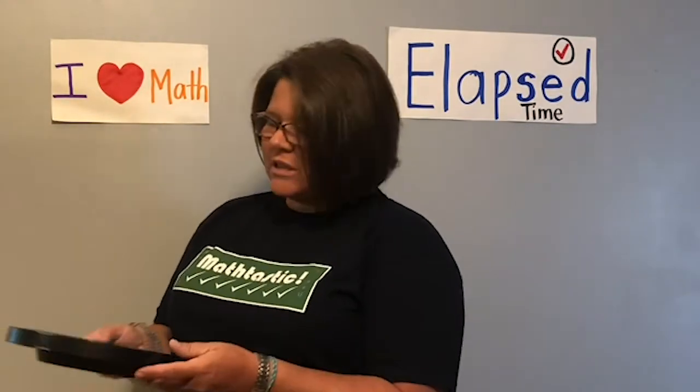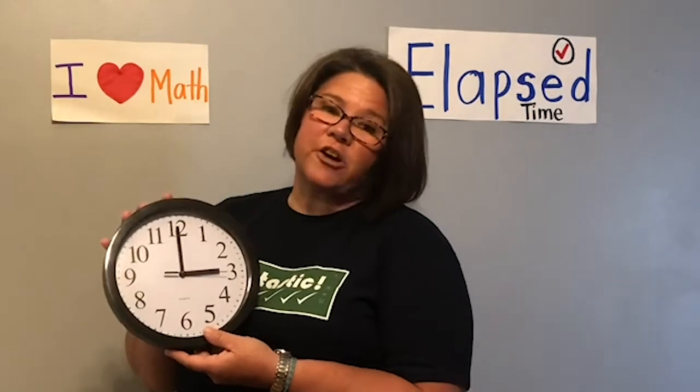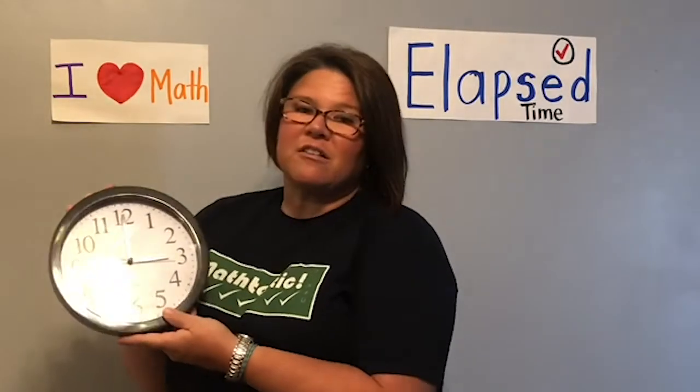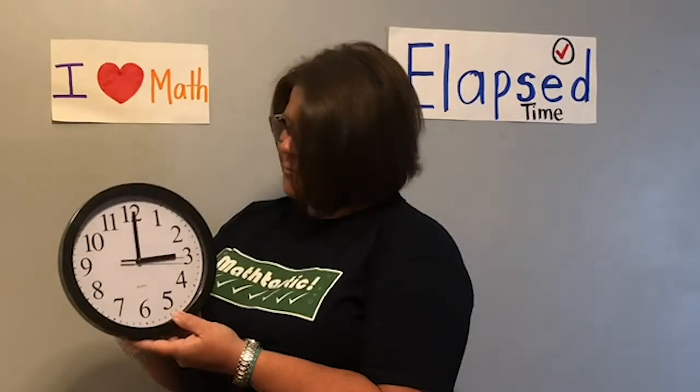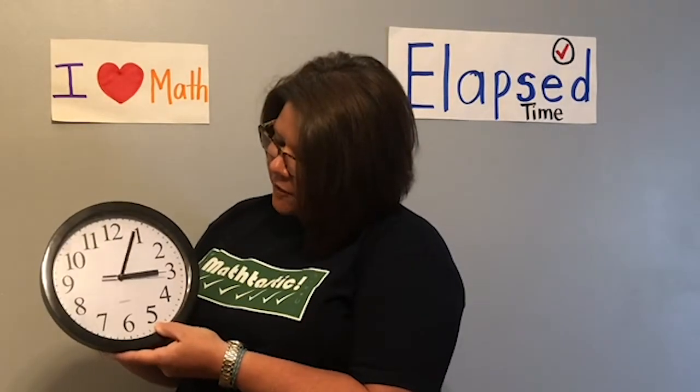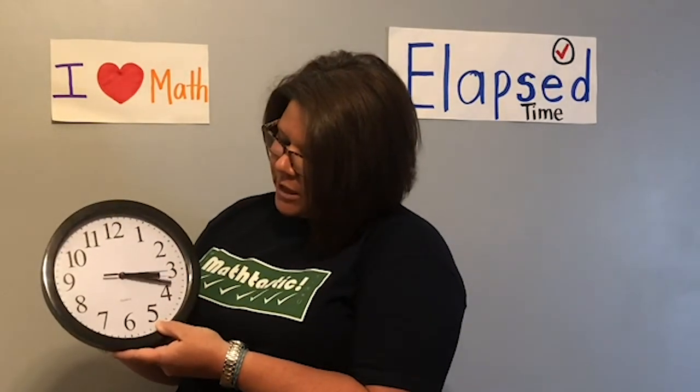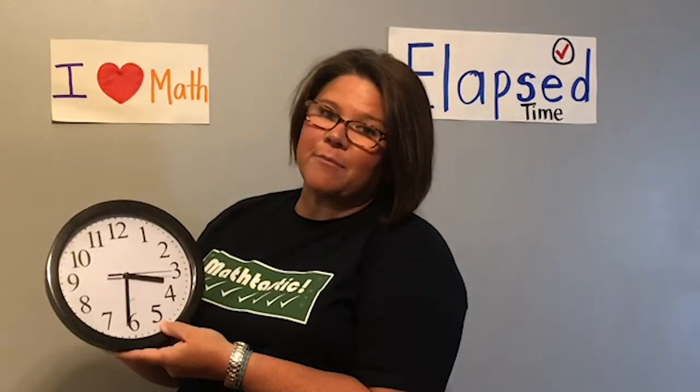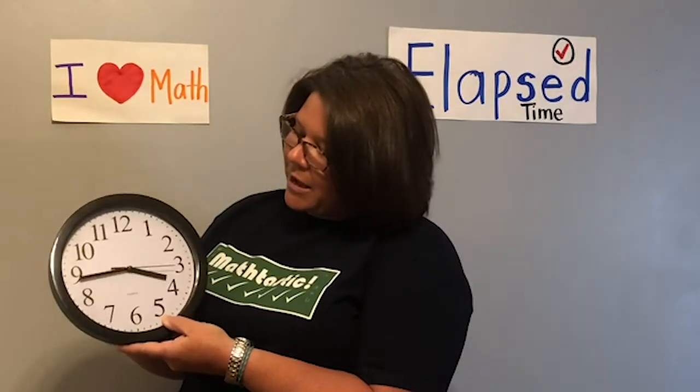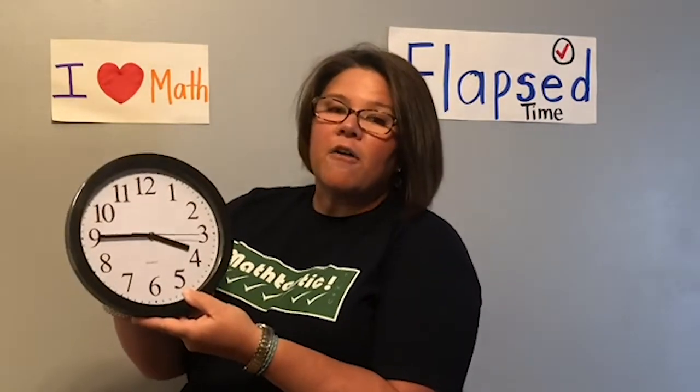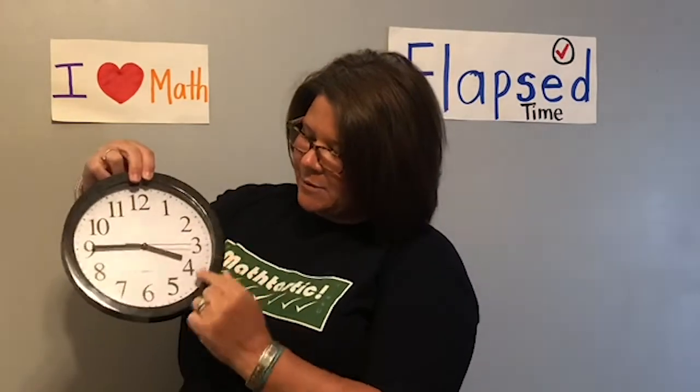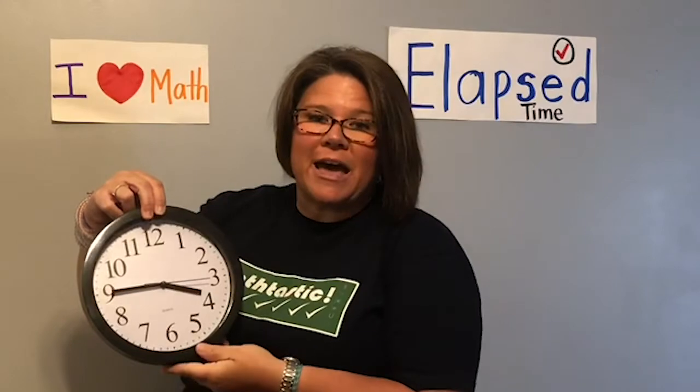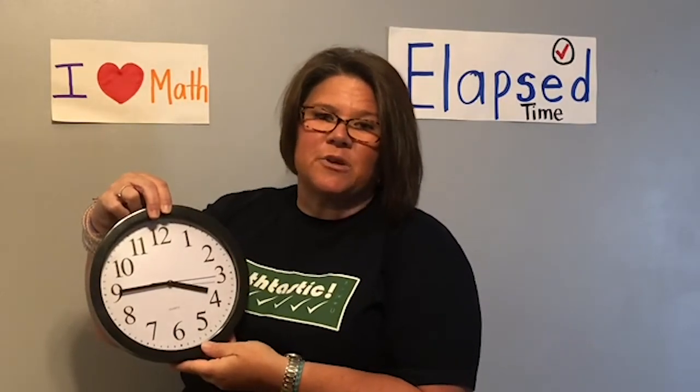For example, let's say after school I started my homework at 3 o'clock and I finished at 3.45. The minutes that have gone by in between my start time of 3 o'clock and my end time of 3.45, that's elapsed time. The time to pass by while I was busy doing my homework.